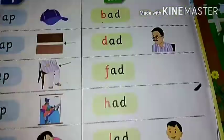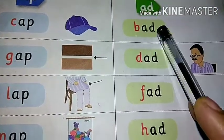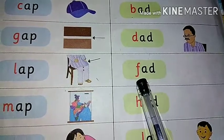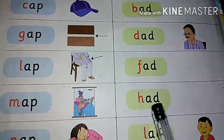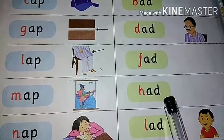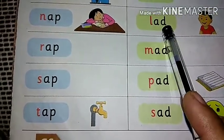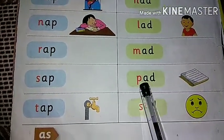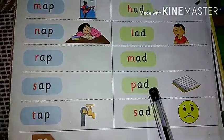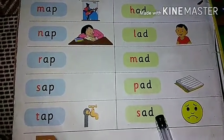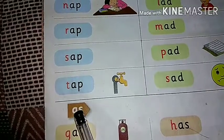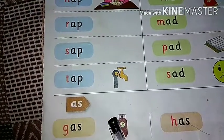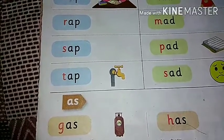Let's see -ad phonic words again. A-D — add. B-add — bad. D-add — dad. F-add — fad. H-add — had. L-add — lad. M-add — mad. P-add — pad. S-add — sad. A-S — as. G-as — gas. H-as — has. Do you understand all those words?